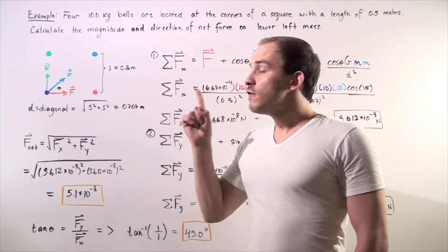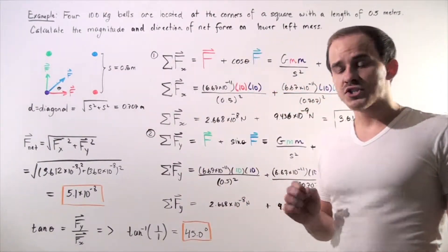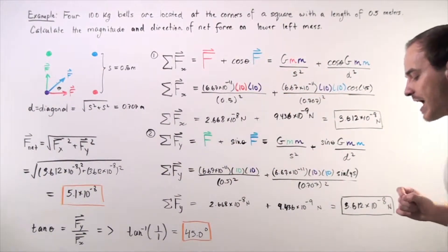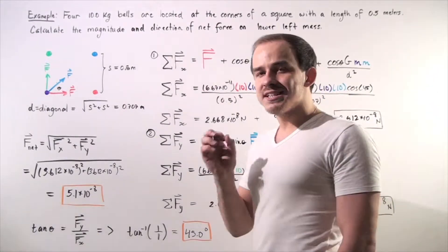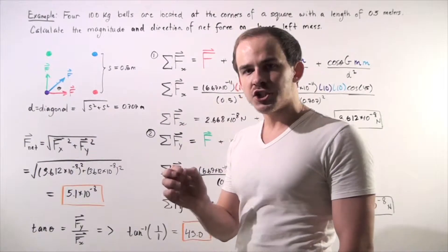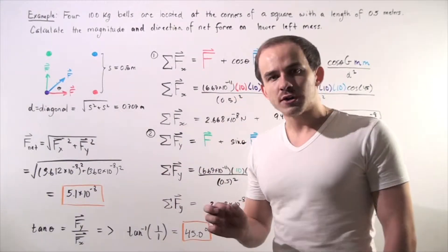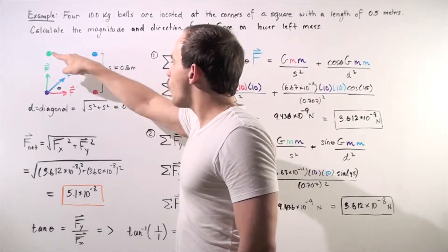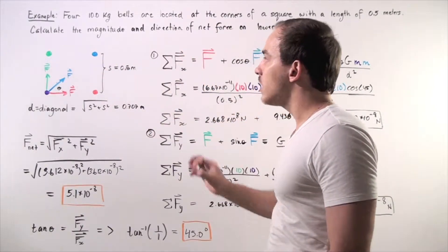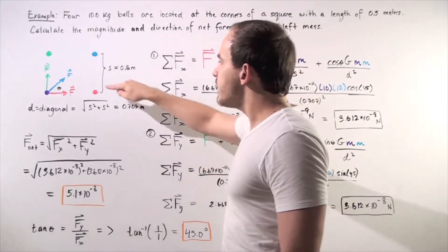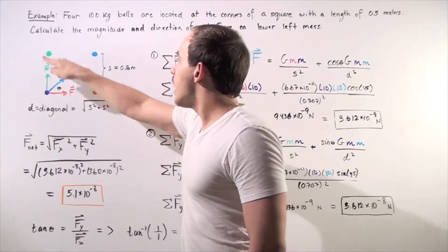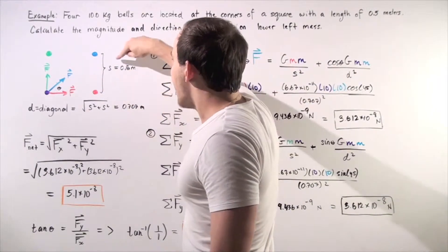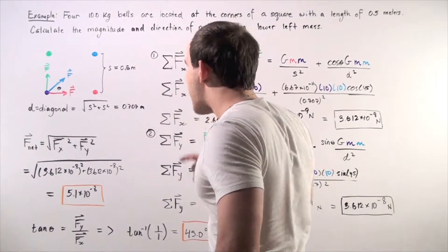Suppose we have four 10-kilogram balls located at the corners of a square with a side length of 0.5 meters. We want to calculate the magnitude and direction of the gravitational net force on the lower left mass. The four 10-kilogram balls are aligned so that each mass is at a corner of the square, and each adjacent side length is 0.5 meters.